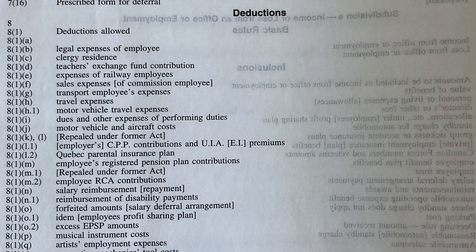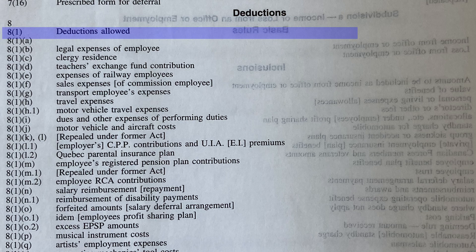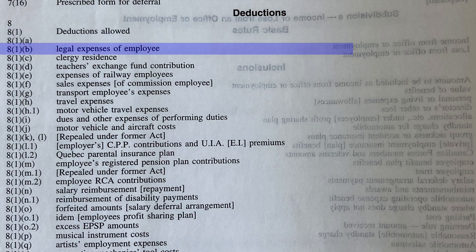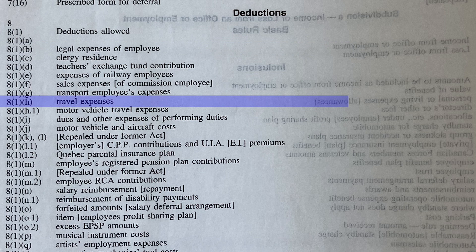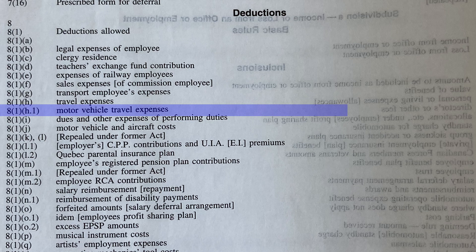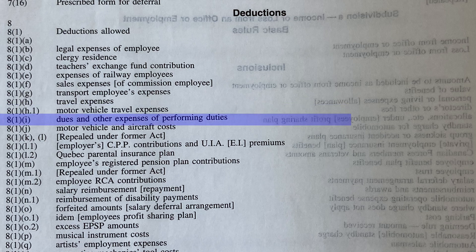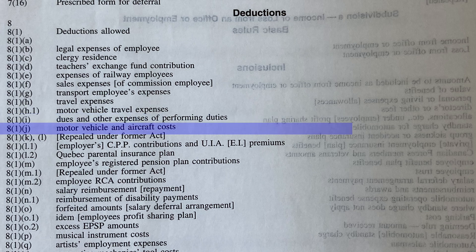Now we can look at some of the deductions in Subdivision A — what can be deducted from the income calculation with respect to someone's income from office or employment. Deductions begin with Section 8, and 8 Subsection 1 says deductions allowed. That's broken down into specific deductions such as 8(1)(b), legal expenses of employee; 8(1)(h), travel expenses; 8(1)(h.1), motor vehicle travel expenses; 8(1)(i), dues and other expenses of performing duties; and 8(1)(j), motor vehicle and aircraft costs. We'll be looking at some of those deductions over the course of the term.